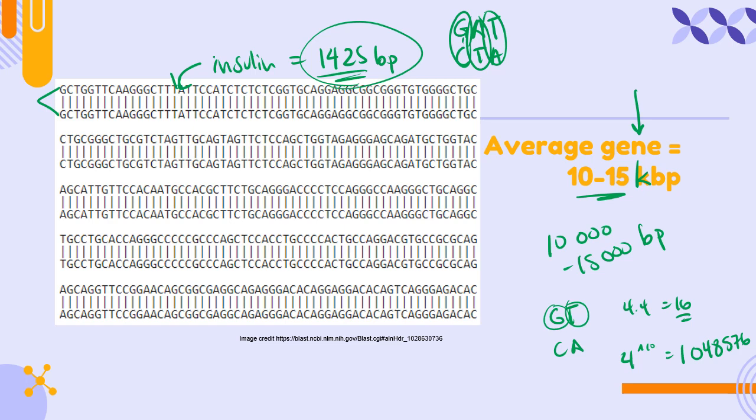Insulin is 1,425 base pairs long. If I wanted to see how many different DNA sequences I could put together that were the same length as the insulin gene, that would be four raised to the 1,425th power. I plug that into my calculator and my TI says overload. That number is too big for my calculator.